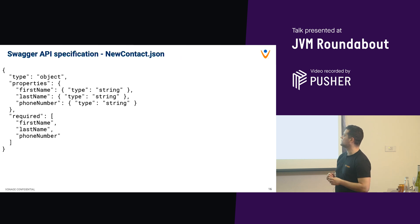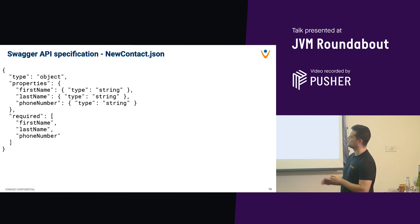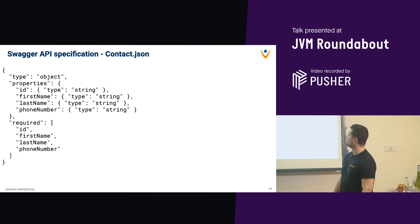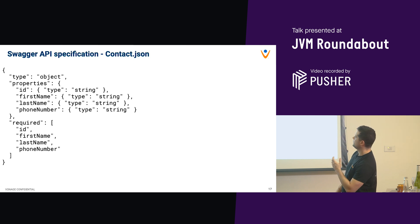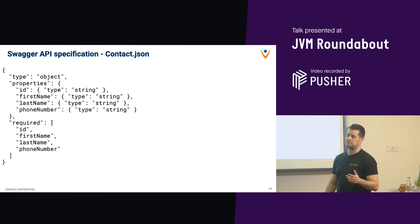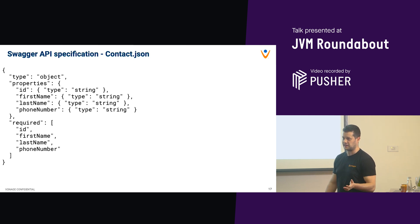The JSON payload schemas: for NewContact you have three required string properties - first name, last name, and phone number. For Contact, you have those same fields plus an ID on top, which is typically returned by the server and not something you specify. Swagger supports polymorphism and importing other definitions, but for clarity on the slide it's shown as the same set of fields plus the additional ID.